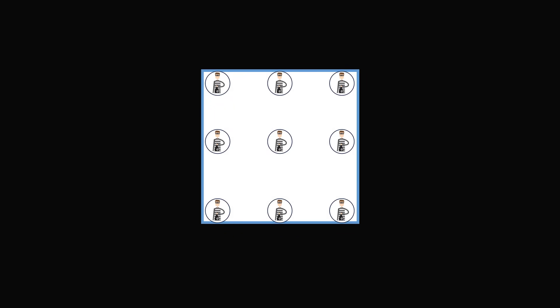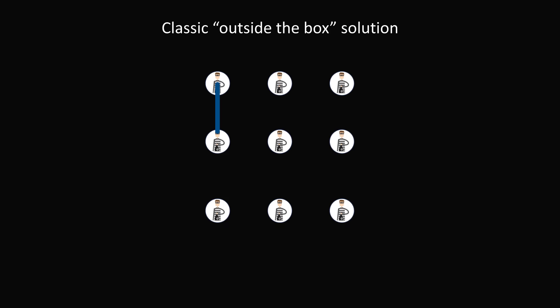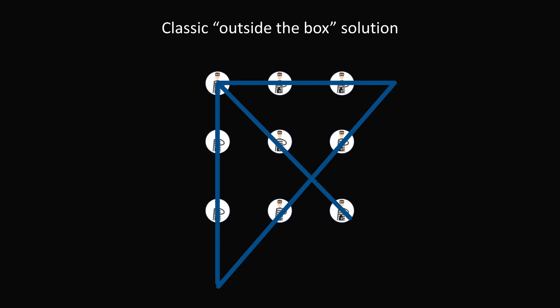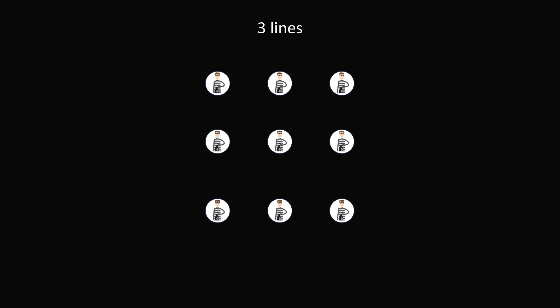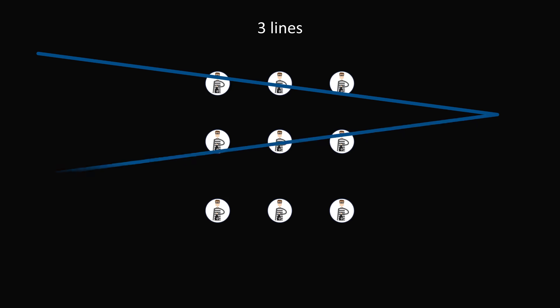You are not limited to the box where the 3x3 grid is — you can draw outside of it. Take the first line and draw it beyond the bottom dot, then connect two dots diagonally, go back to the beginning dot, and finally draw one diagonal line connecting all remaining dots. This is the classic outside-the-box solution with four straight lines. But there are other clever ways too. If the dots have some thickness, you can solve this with just three lines in a zigzag pattern — connect the top three dots, zigzag back for the next three, and zigzag again for the bottom three.